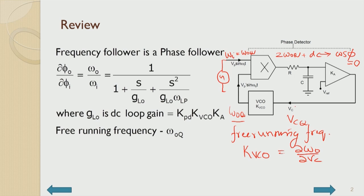So cos phi should also go to 0, so that VC remains at VCQ, and therefore the phase shift is adjusted automatically to pi by 2, so phi becomes equal to pi by 2. So it is now phase locked. A phase follower is a frequency follower — the phase detector does not know whether it is the frequency that is varying or the phase that is changing.